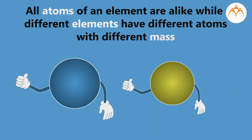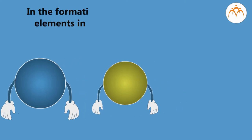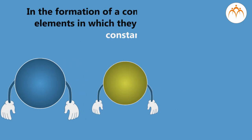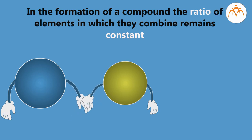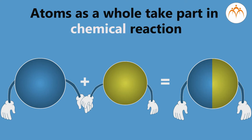In the formation of a compound, the ratio of elements in which they combine remains constant. Atoms as a whole take part in the chemical reaction. Let us revise some electrostatic experiments performed in lower classes, which will help us understand the structure of the atom.